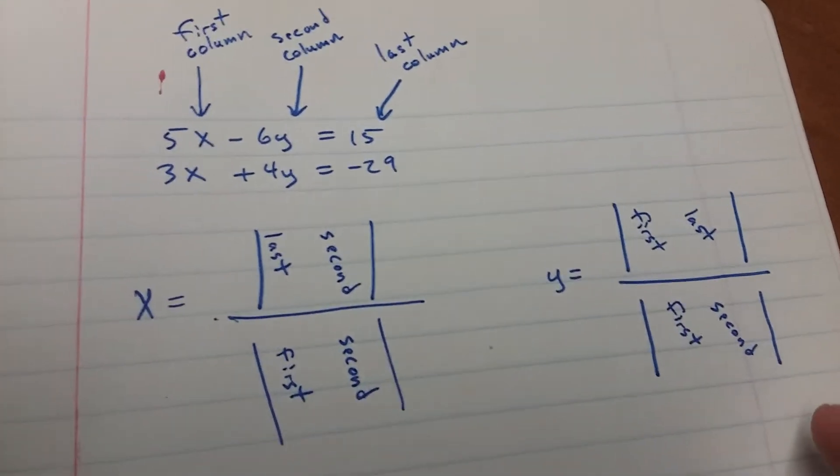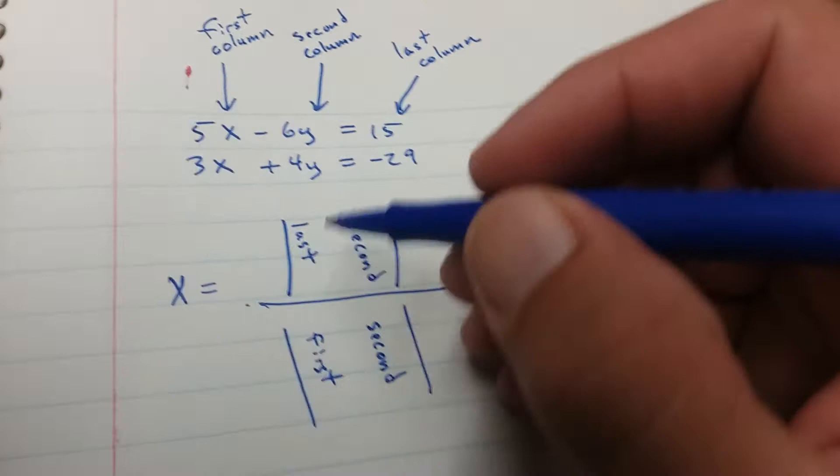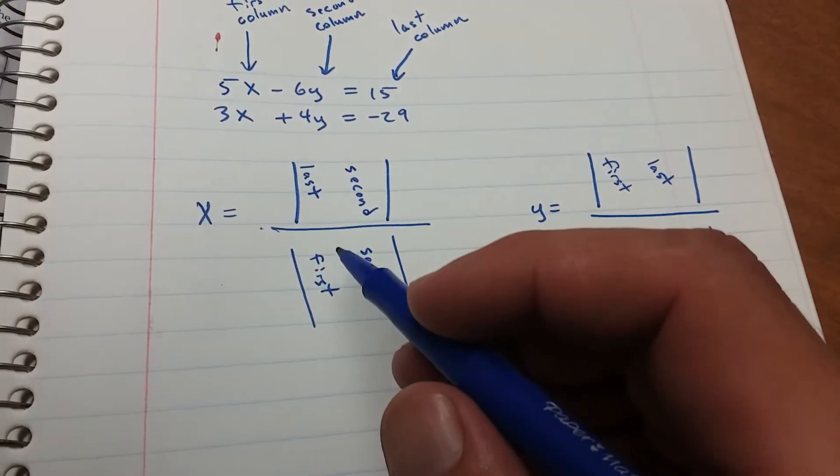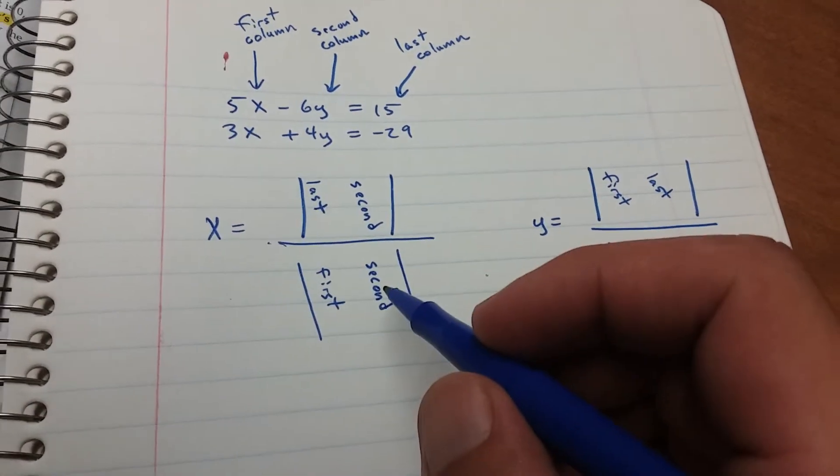All right, so this is my way of doing it. I do it slightly different in the book. I do the determinant of the last column and the second column divided by the first column and the second column.